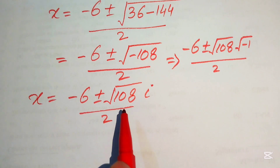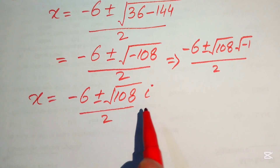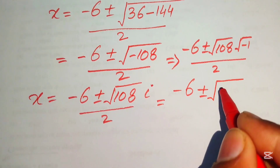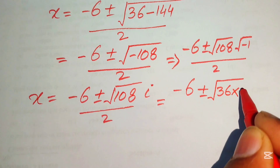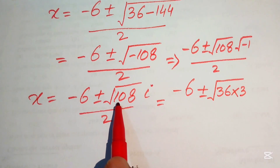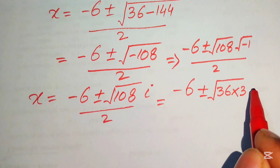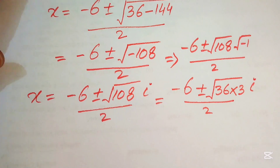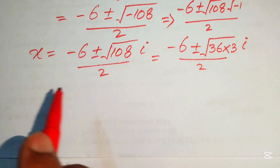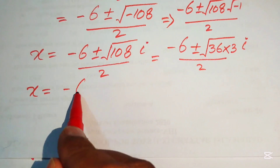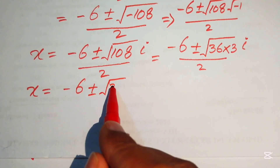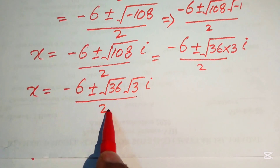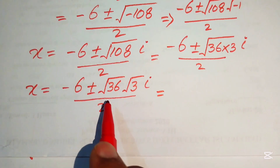We rewrite square root of 108 as the square root of 36 times 3. Breaking the radical sign, this becomes the square root of 36 times the square root of 3 times i, all divided by 2.